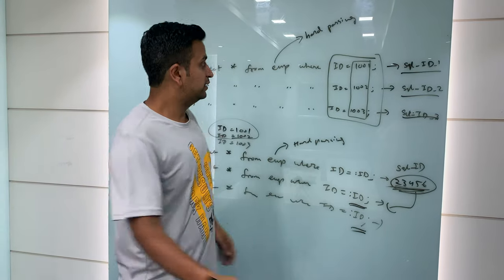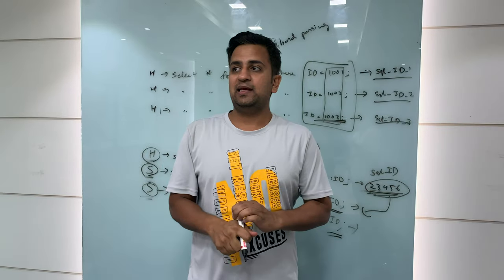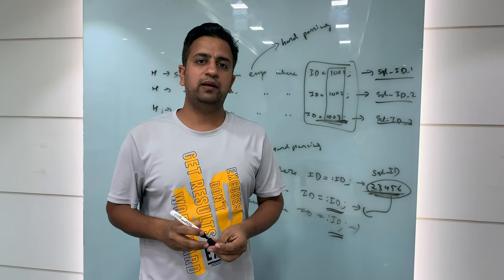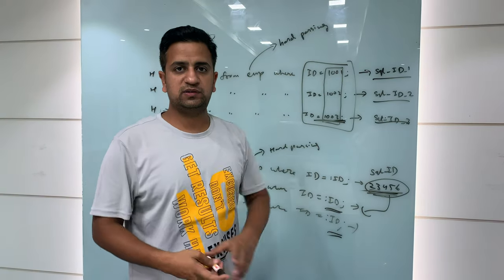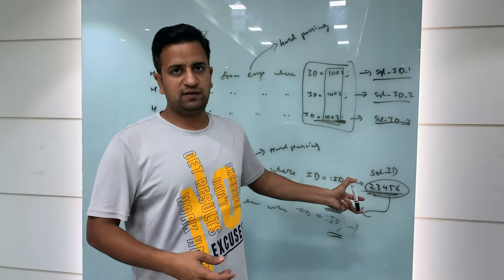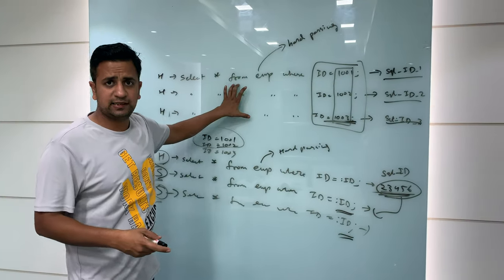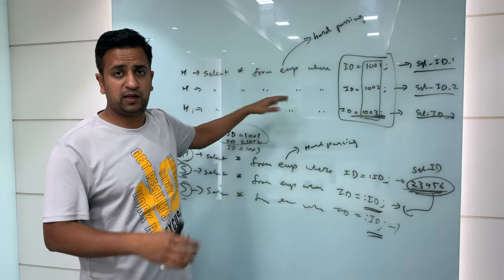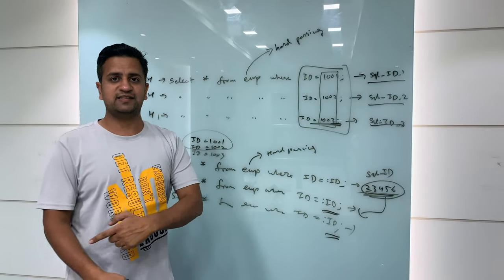The approach of writing literal values like 1001, 1002, 1003 directly in SQL is called using literals. Do not use literals. As an Oracle DBA, it is your responsibility to ensure bind variables are used. Application developers should also know this when dealing with the Oracle database. This is one of the simplest and most effective ways to reduce hard parsing.